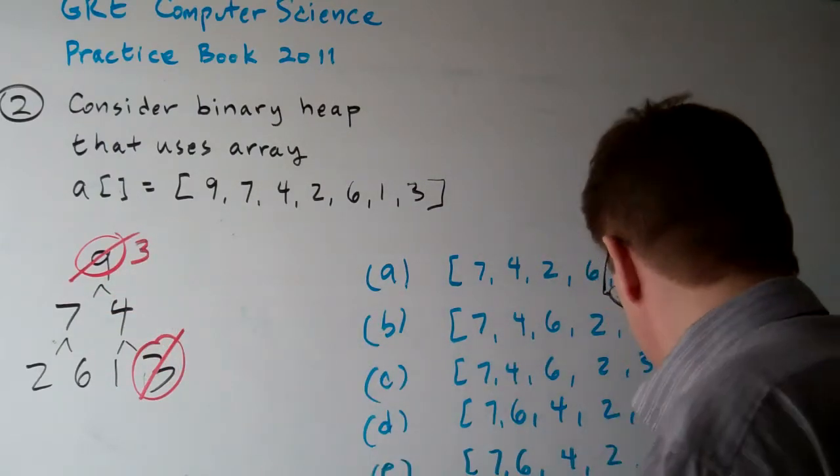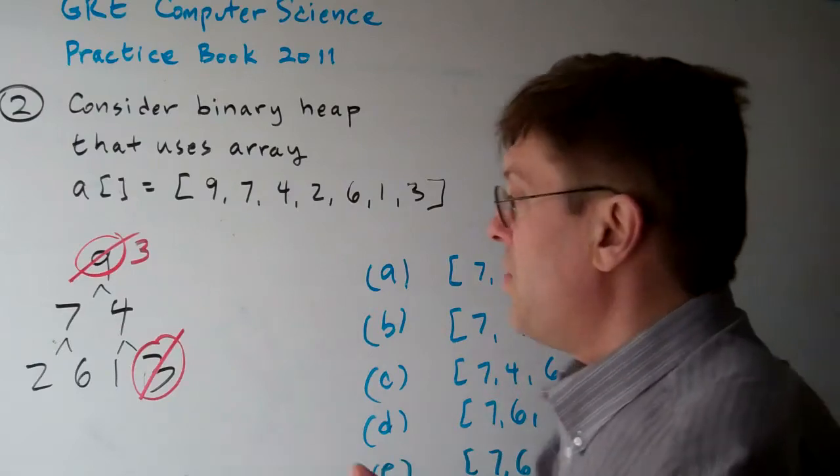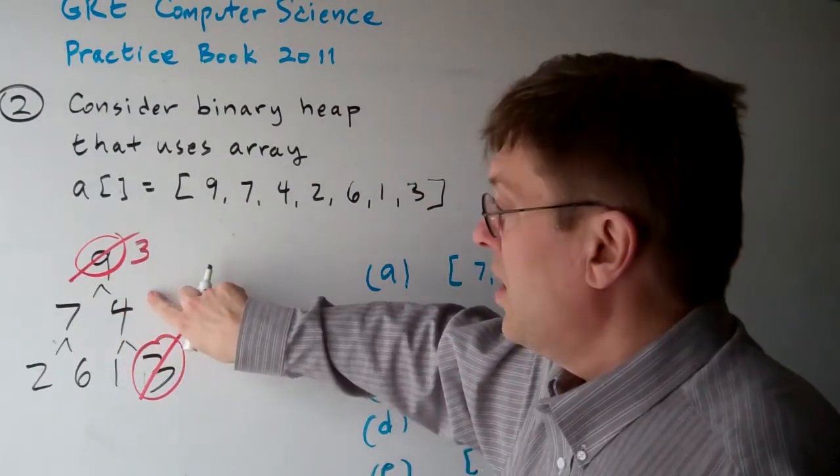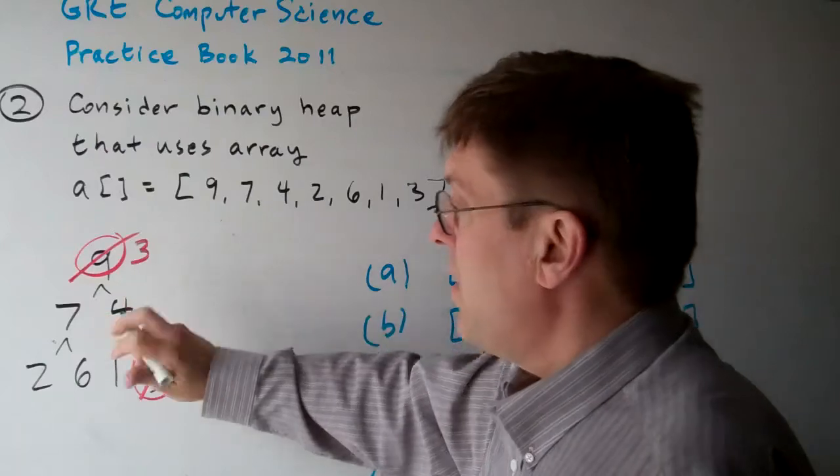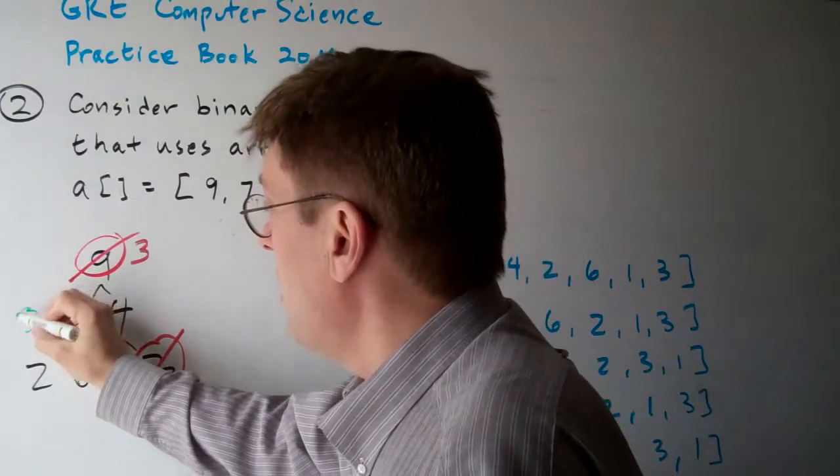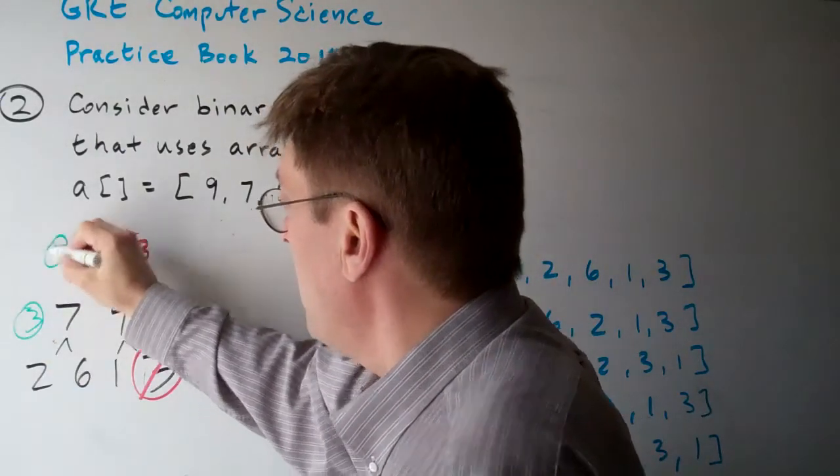So in this case, the three will look at the four and the seven, and it's going to pick the higher one, so the three's going to go down here, the seven's going to go up here.